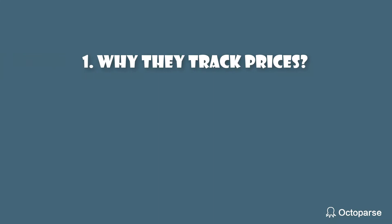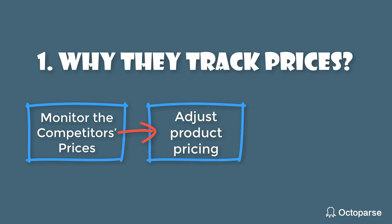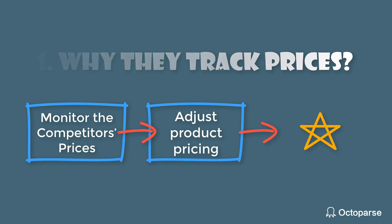Why do they track prices? First of all, that's the way they monitor their competitors. And then they deal with product pricing to win over more sales and maximize their margins. With this price comparison model in place, in the long run, they develop a dynamic pricing strategy that adapts to market fluctuations. This is how price intelligence leads to success.